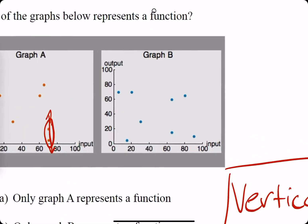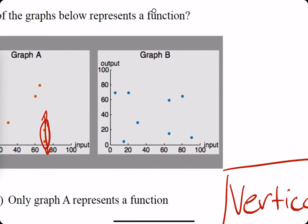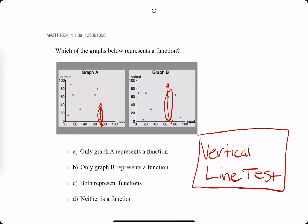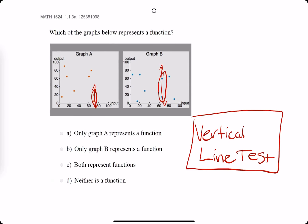Then we look at graph B and we do the same thing. We scan across and say, are there any two points that would exist on the same vertical line? And it kind of appears that right there, there are these two points that could probably be on that same line. So we say that graph B is not a function because it fails the vertical line test as well.